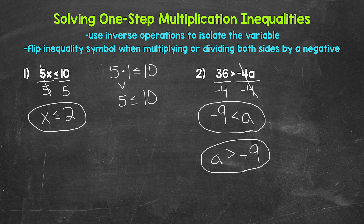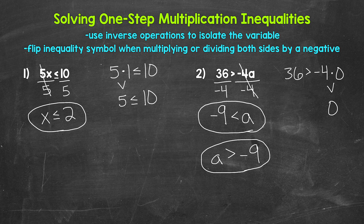Our answer is a is greater than negative 9, so a can be anything greater than negative 9. Let's check a solution — let's use zero. Plug in zero for a: 36 is greater than negative 4 times zero. Negative 4 times zero gives us zero, and 36 is greater than zero, so we are correct. a is greater than negative 9.